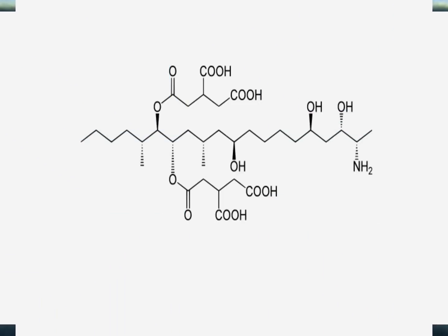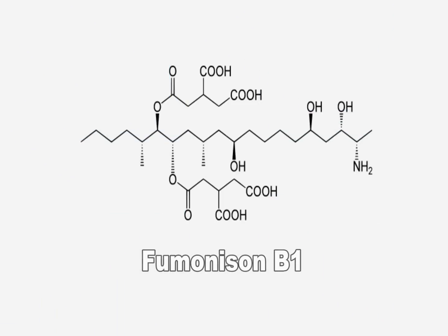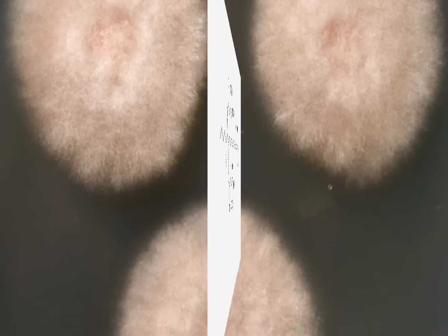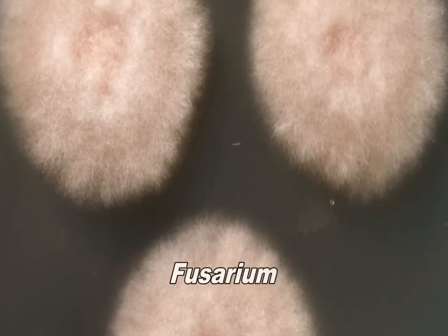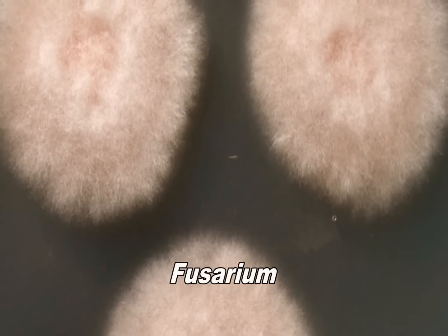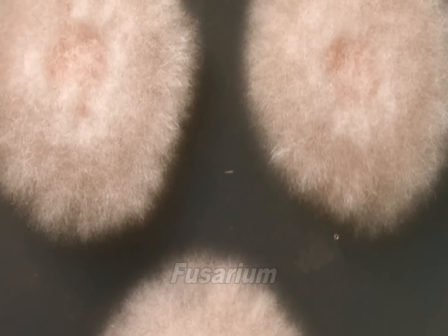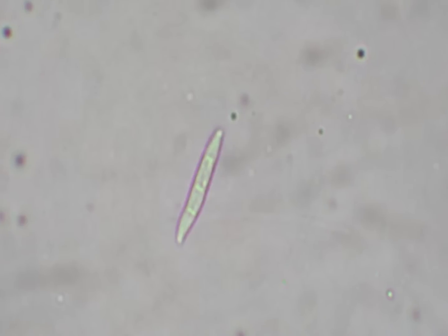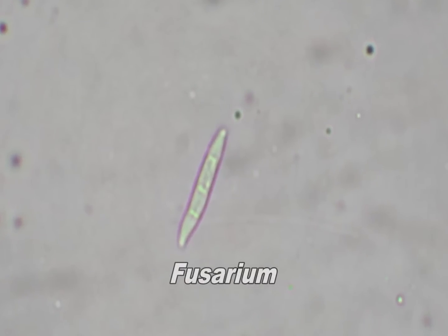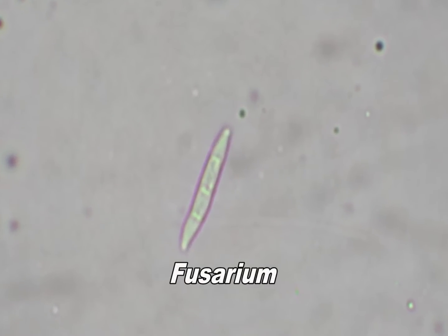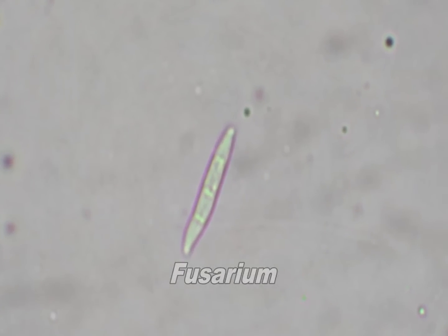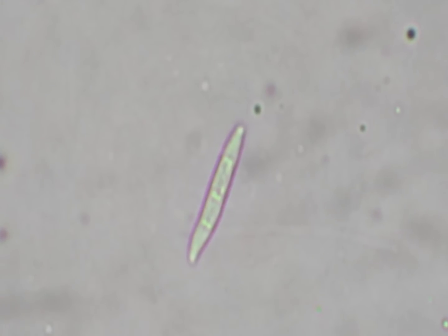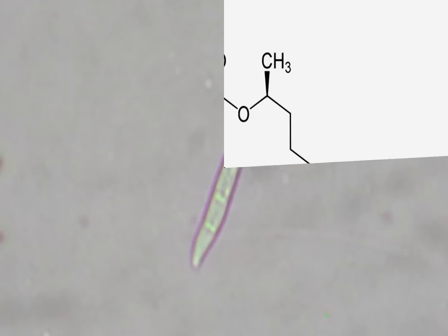Fumonisin is a mycotoxin produced by several species of Fusarium fungi, which mainly occurs in corn, wheat, and other cereals. T2 toxin is another mycotoxin produced by several species of Fusarium fungi that contaminate grains. It was reportedly once considered for possible use as a biological weapon.